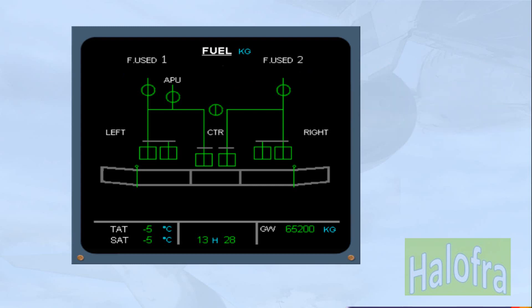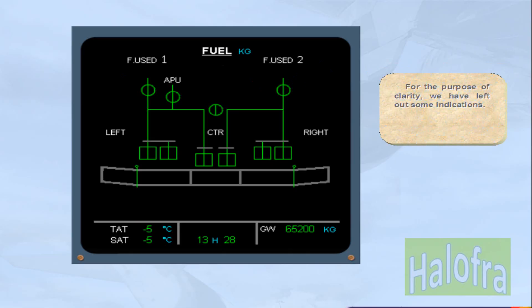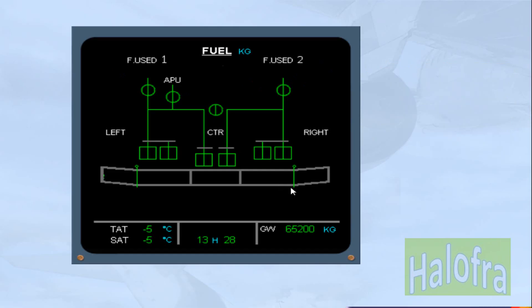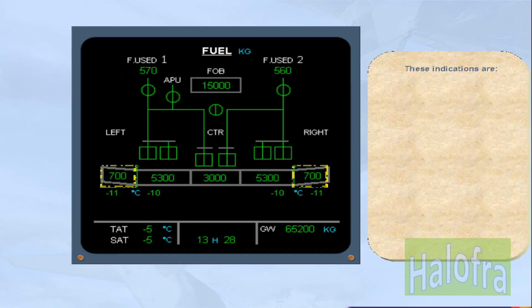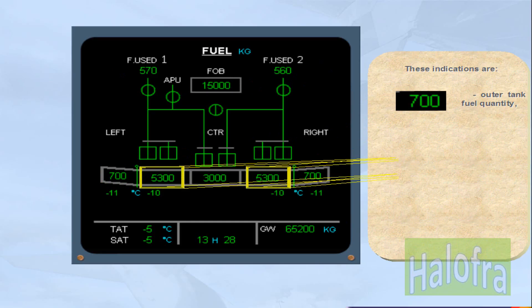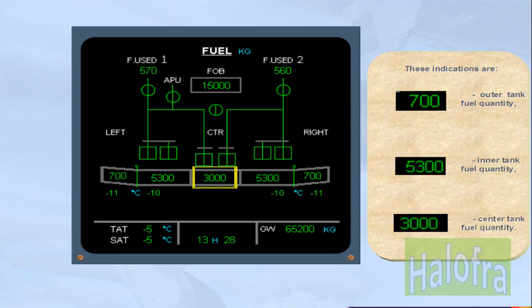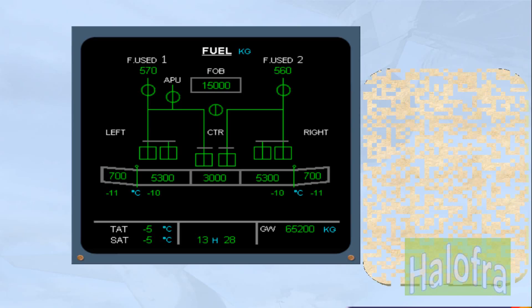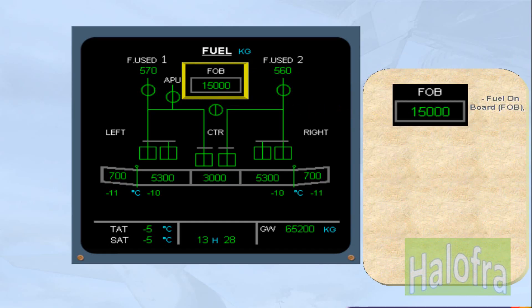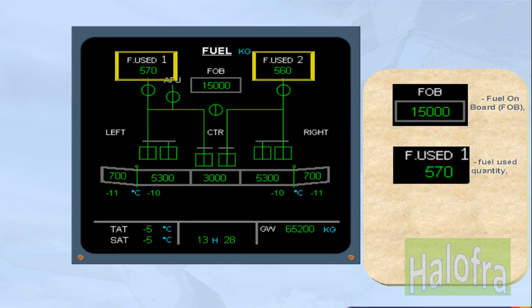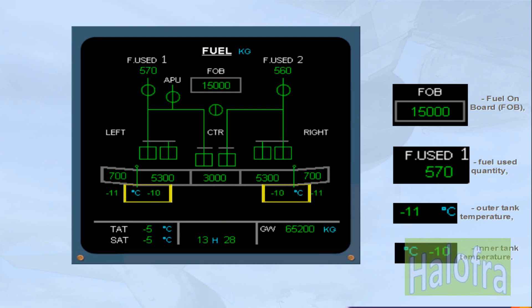For the purpose of clarity, we have left out some indications. Click on the ECAM page to display them. These indications are: outer tank fuel quantity, inner tank fuel quantity, centre tank fuel quantity, fuel on board (FOB), fuel used quantity, outer tank temperature, and inner tank temperature.